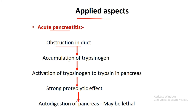Acute pancreatitis: when there is obstruction in the pancreatic duct, there is accumulation of trypsinogen and its activation to trypsin inside the pancreas. This causes a strong proteolytic effect and autodigestion of the pancreas, which can be a serious or lethal condition. Chronic pancreatitis also exists but is a topic for the medicine department and will be covered in detail in the future.